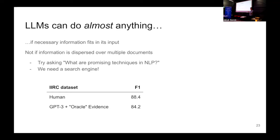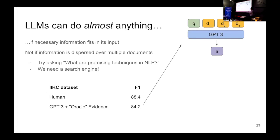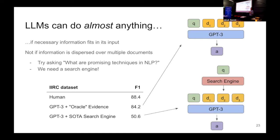For tasks where information is dispersed across documents, we need a search engine to retrieve relevant content. There's a dataset where the information is dispersed over Wikipedia and you have to collect all of it to answer the question. Humans get 88 F1. If you feed GPT-3 oracle evidence — three or four paragraphs from all of Wikipedia that are sufficient and necessary to answer the question — you get pretty close to human performance. But if you leave it to a search engine to retrieve what it thinks is relevant evidence, performance drops to 50%. The bottleneck is the search engine, not the language model.